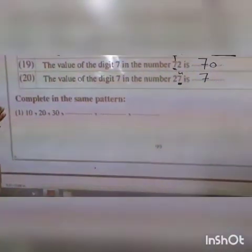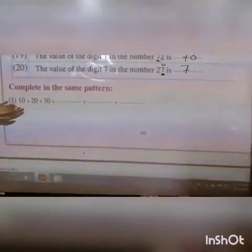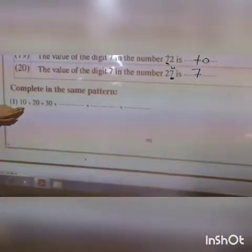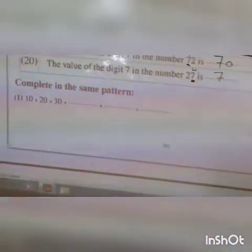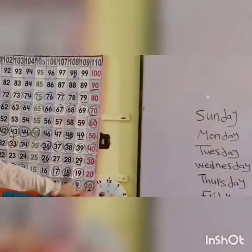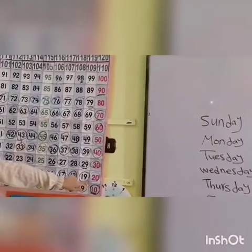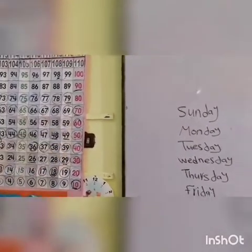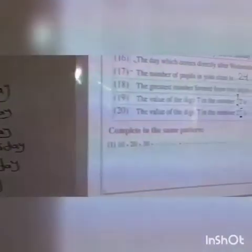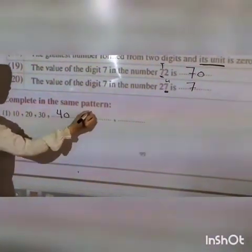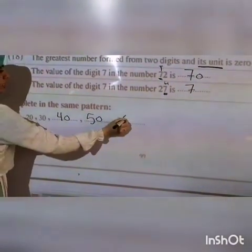Complete in the same pattern: ten, twenty, thirty. Count by tens using the 1–120 chart: ten, twenty, thirty, forty, fifty, sixty. So the pattern is ten, twenty, thirty, forty, fifty, sixty.